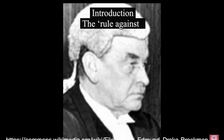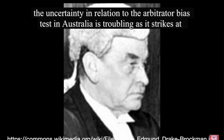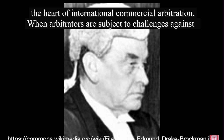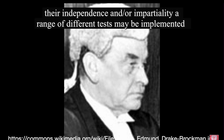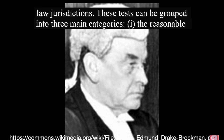Introduction. The rule against bias constitutes the very soul of the justice delivery system. As a result, the uncertainty in relation to the Arbitrator Bias Test in Australia is troubling as it strikes at the heart of international commercial arbitration. When arbitrators are subject to challenges against their independence and/or impartiality, a range of different tests may be implemented to assess the allegation. These tests vary between jurisdictions, including among common law jurisdictions. These tests can be grouped into three main categories.